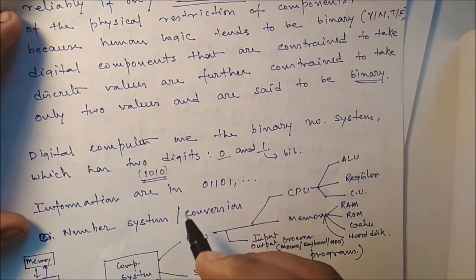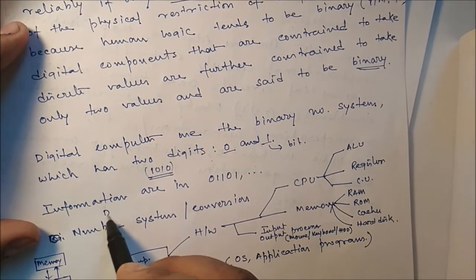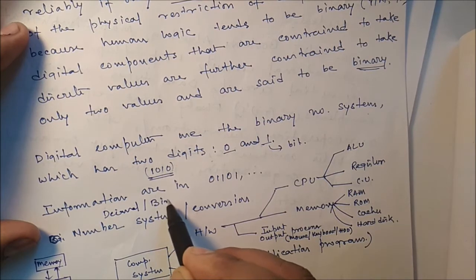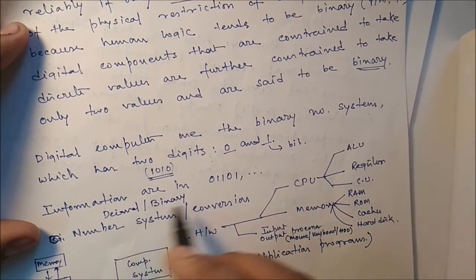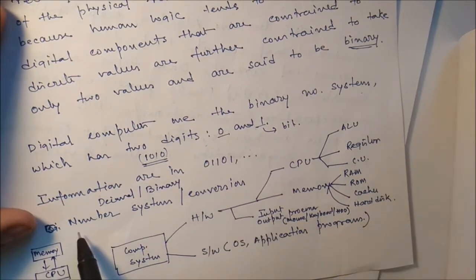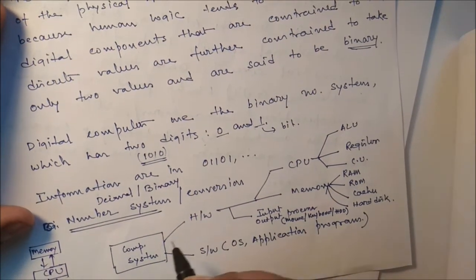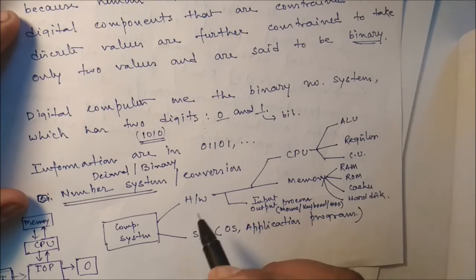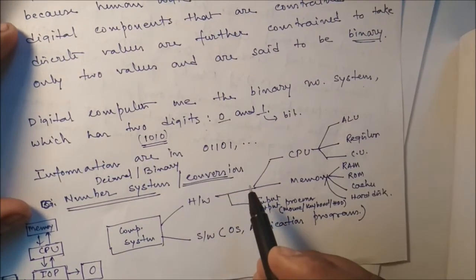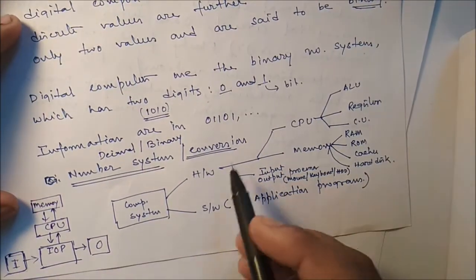We work with decimal numbers and are familiar with them. We are not familiar with binary numbers, so there must be conversion between decimal to binary, binary to decimal. We should know various number systems - hexadecimal, octal, binary, decimal, etc. In the forthcoming videos we will see the conversions.